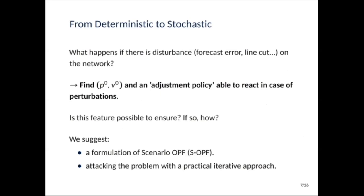So now how do we switch from deterministic to stochastic OPF? What if there is a disturbance on the network? You still want your solution to be reliable. And how can we ensure the reliability of the solution? The idea is to find P0 and V0, the nominal values, but also an adjustment policy in case you have perturbations on the network. The first question to ask is, of course, is it possible to ensure such a feature? And if so, how? And what we suggest are the main contributions of the paper: a formulation of scenario OPF, and also how to attack practically this problem.